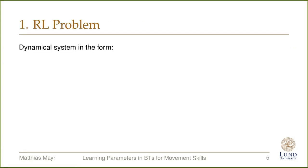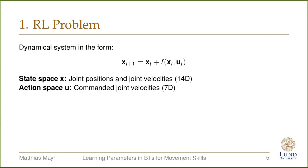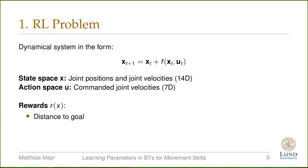In order to optimize policy parameters, we adopt the policy search formulation. We have a dynamical system in the form x_{t+1} = x_t plus state changes based on the current state and the action taken. Our state space consists of the continuous-valued joint positions and joint velocities of the manipulator. The actions are the seven continuous-valued commanded joint velocities. We define reward functions based on the state such as distance to a goal, avoidance of objects in the workspace, and success of the behavior tree.